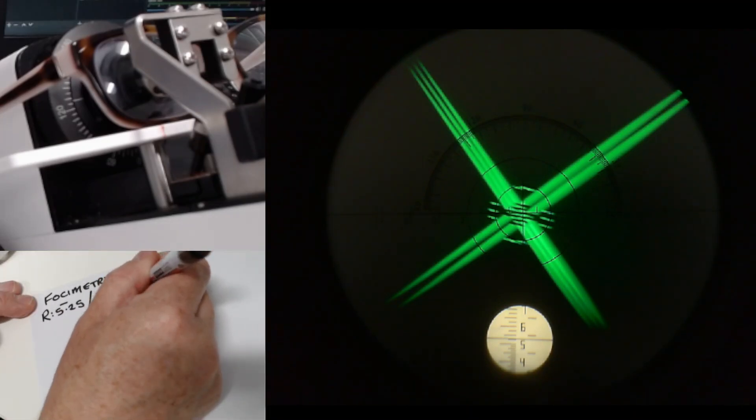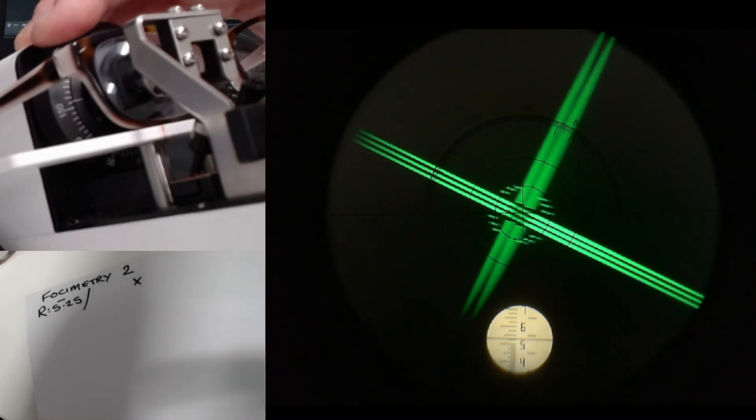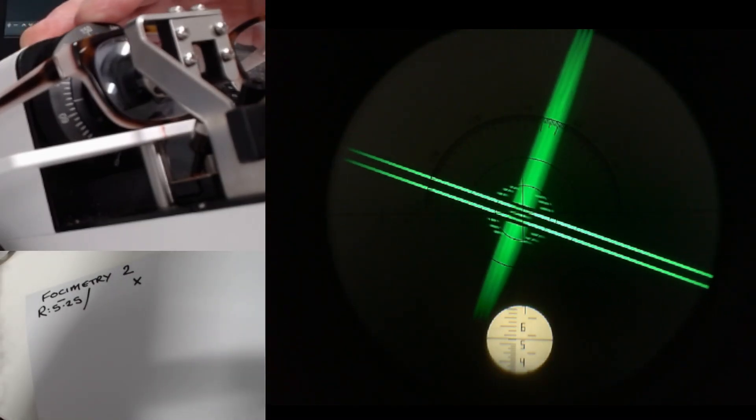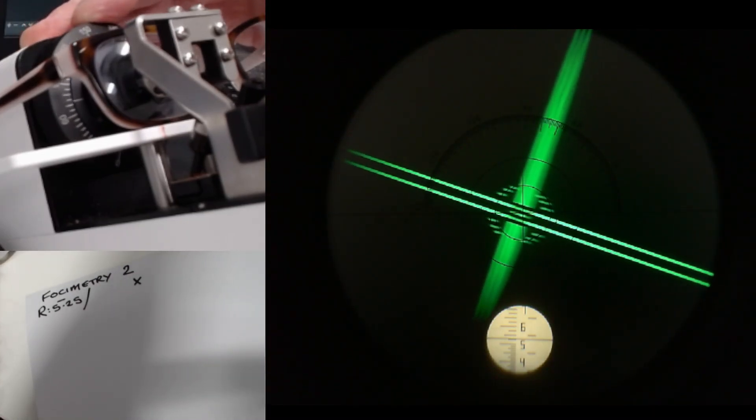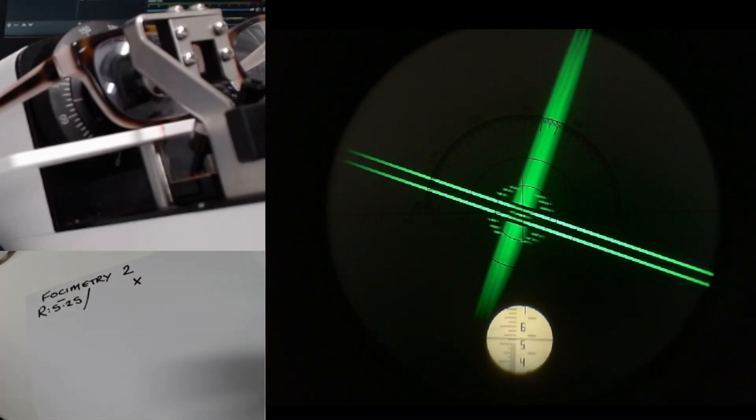There's going to be a cyl and an axis. And if I turn the axis here so that the two lines line up with the little dashes, that looks pretty good. If I read off the cyl axis, that is 72.5.